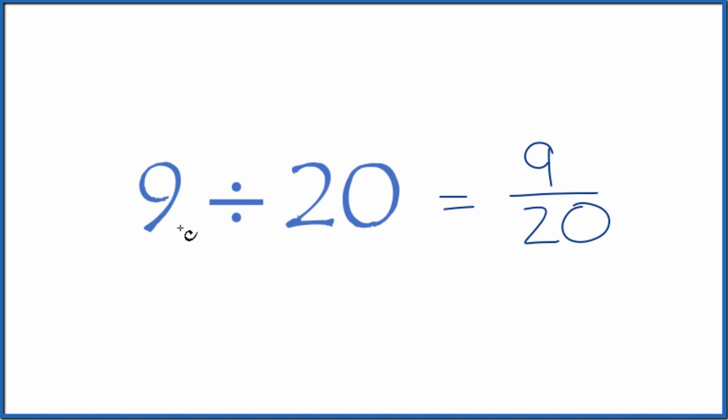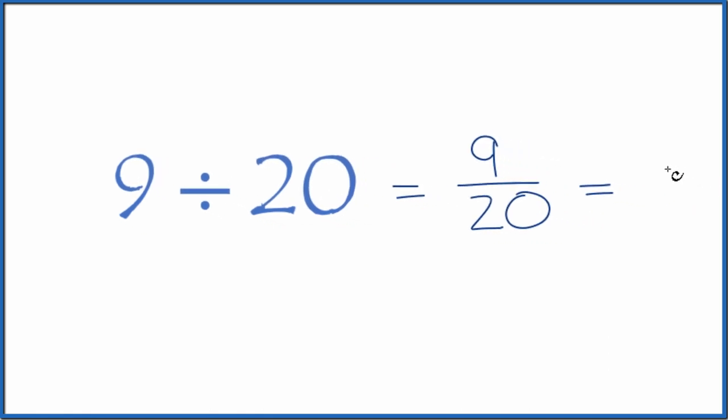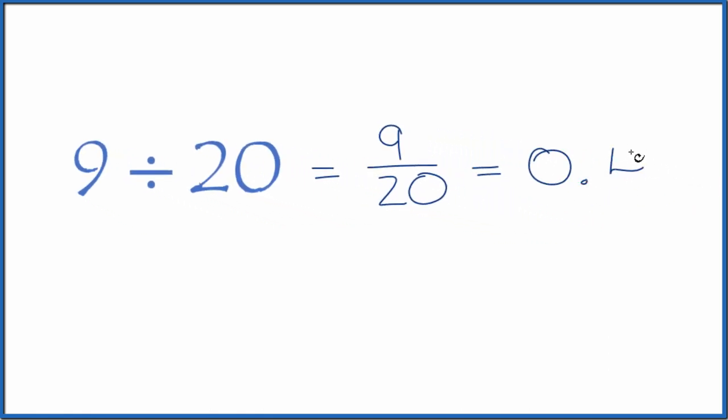We could also just take a calculator and divide 9 by 20. So 9 divided by 20, we end up with 0.45. So when we divide 9 by 20, we get the fraction 9 twentieths or the decimal 0.45.